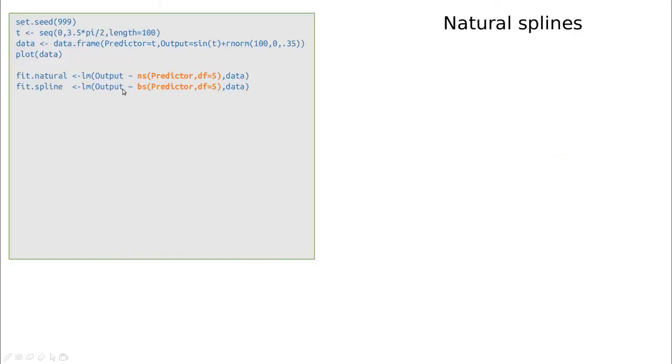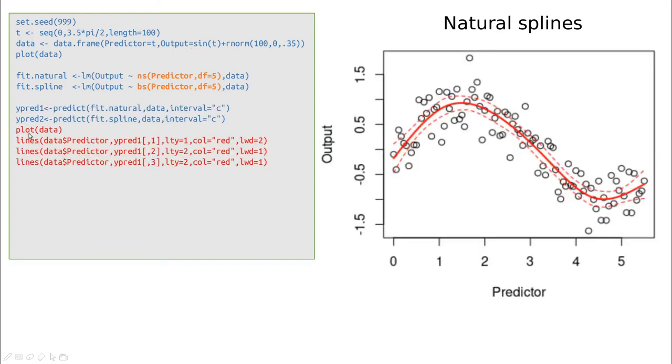You can run an experiment using natural splines or B-splines. In this case, I'm going to use just five knots. I'm using a sine function with some noise. Let's do some predictions. This is for the natural spline. You can see these straight lines in this part. And you can see this is capturing pretty well, even with just five points.